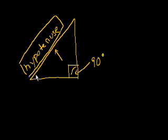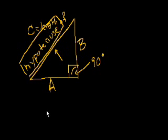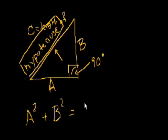So what does the Pythagorean theorem tell us? Well, let's call C is equal to the length of the hypotenuse. And let A be the length of this side, and let B equal the length of this side. What the Pythagorean theorem tells us is that A squared plus B squared is equal to C squared.